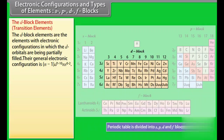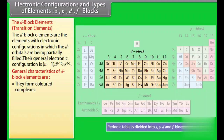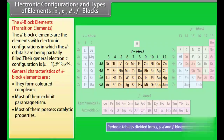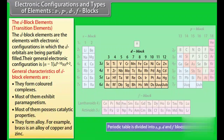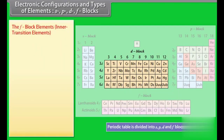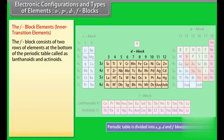The D block elements — Transition elements: The D block elements are elements in which the D orbitals are being partially filled. General characteristics of D block elements are: they form colored complexes; most exhibit paramagnetism; most possess catalytic properties; and they form alloys. For example, brass is an alloy of copper and zinc.